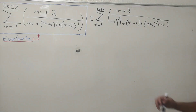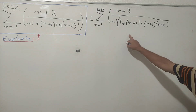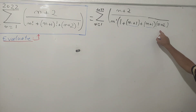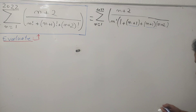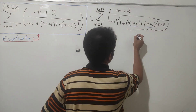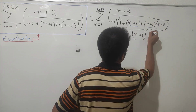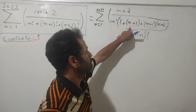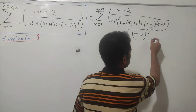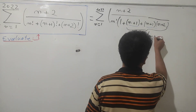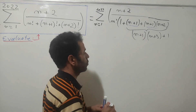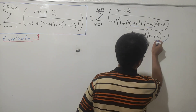Now I'm going to calculate the bracket in the denominator. Since we have (n+1) appearing in each term, I'm going to take it as a common factor. This gives us (n+1) times (1 + (n+2)), which equals (n+1)(n+3).